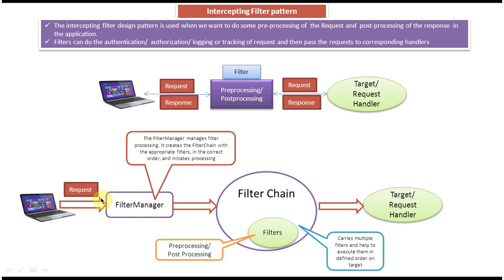So the client sends the request, then the filter manager creates the filter chain, adds the filters, and initiates the filter processing. The filter chain takes all the filters and executes them in the defined order. Once all the filters have been executed, it invokes the target or request handler. This is how the intercepting filter design pattern works overall.